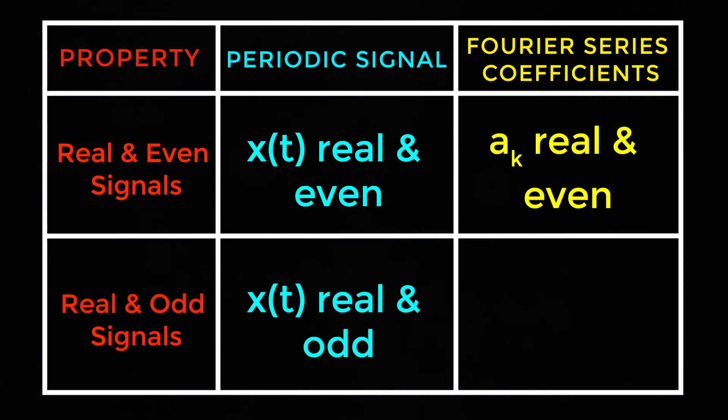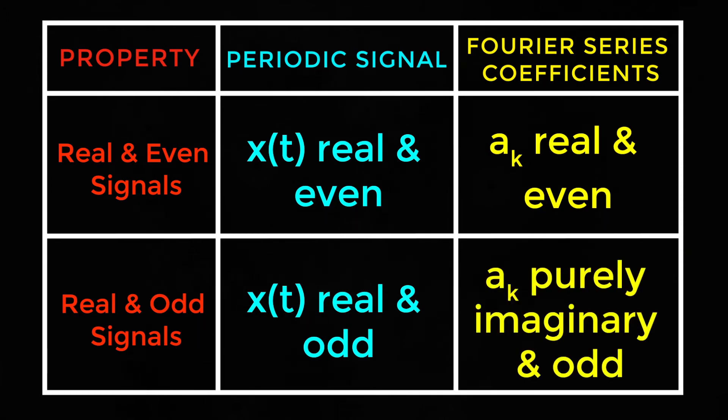For periodic signals x of t real and odd, Fourier series coefficient is purely imaginary and odd.